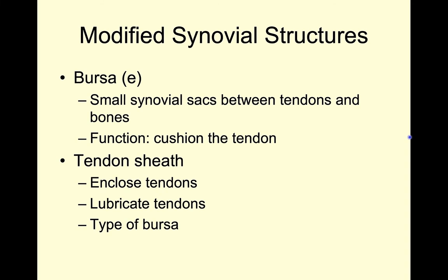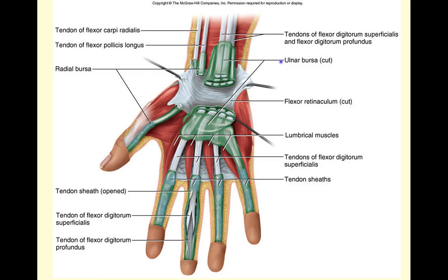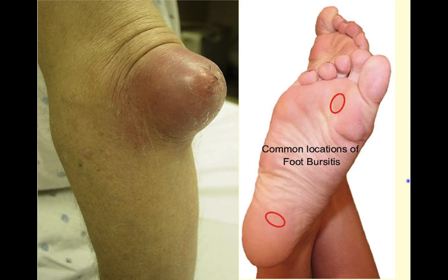A couple of other things you'll see are bursa. Bursa are small synovial sacs that exist between tendons and bones, so they act as little pillows or cushions. Tendon sheaths are modified bursa that enclose or wrap around a tendon and lubricate the tendon's movement. We see this in our hands — the ulnar bursa and the radial bursa act as little pillows for those tendons, and more distally we can see our tendon sheath for those flexor digitorum tendons, surrounding the tendon and allowing it to slide by more easily. You may have heard of bursitis — that is the inflammation of a bursa, and we get bursitis on our plantar surface of our foot as well.